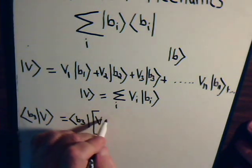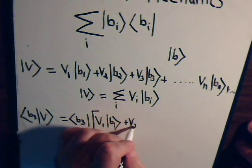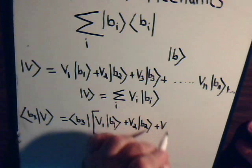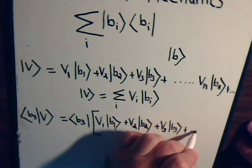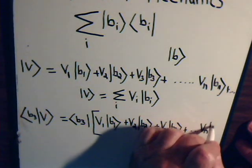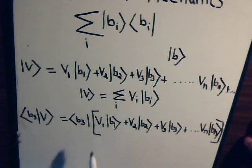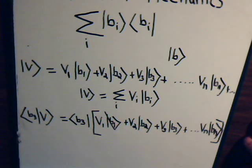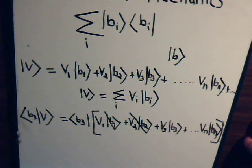And we just continue along like this. Okay, here then we're going to take the inner product of b3 with b1, but that's zero, so you don't get any contribution from here. Take the inner product of b3 with b2, that's zero so you don't get any contribution from here.